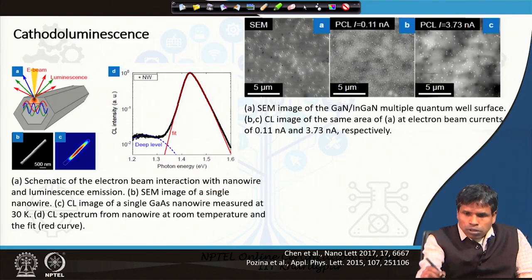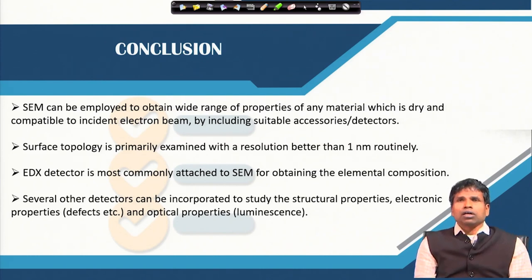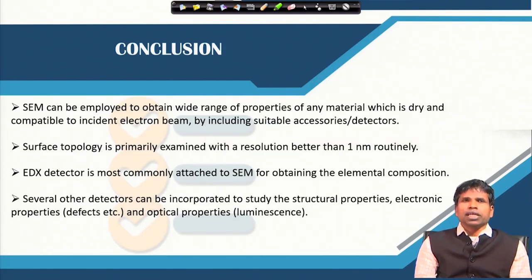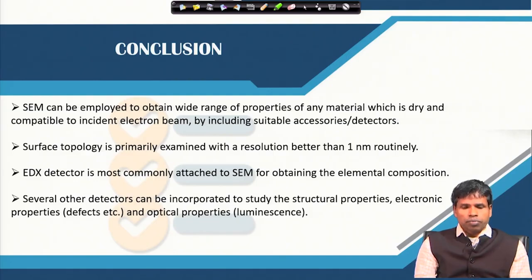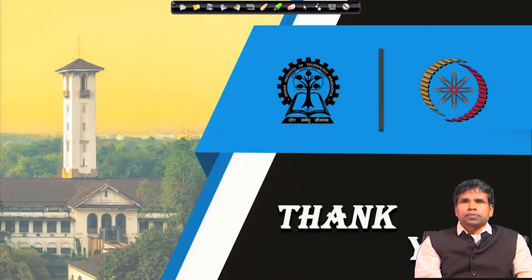In conclusion, the scanning electron microscope can be used for many purposes provided suitable detectors are attached. Primarily it examines surface topology with resolution better than one nanometer using field emission SEM. With suitable detectors, structural properties such as crystallinity, crystal structure, and grain orientation can be studied via EBSD. Electronic properties such as defects can be studied via EBIC, and optical properties such as band gap and luminescence can be studied via cathodoluminescence. These are the diverse types of studies that can be performed with a scanning electron microscope.